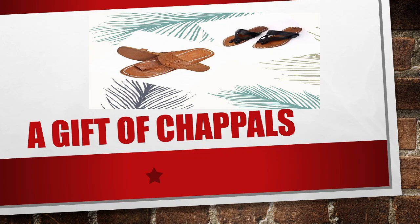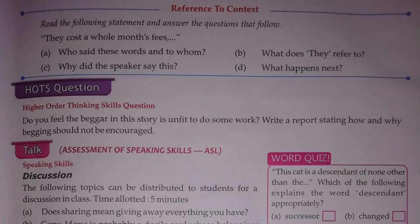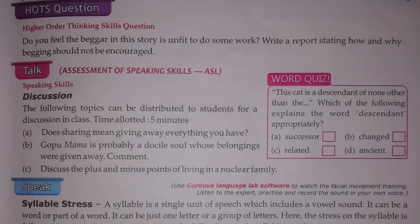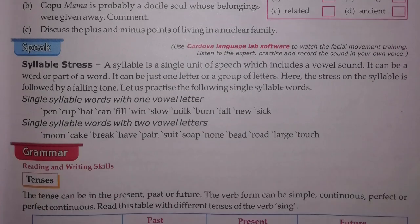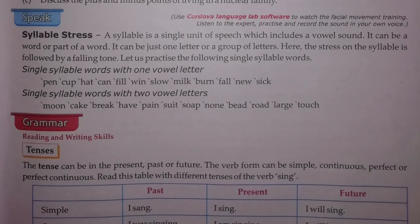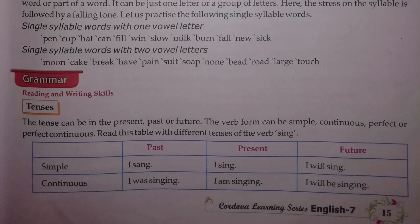So let's start today's grammar work which is given in the first chapter, 'A Gift of Chappell.' We have done reference to context in our last video. Now come down to the grammar portion which is given in reading and writing skills — they are telling about the tense.